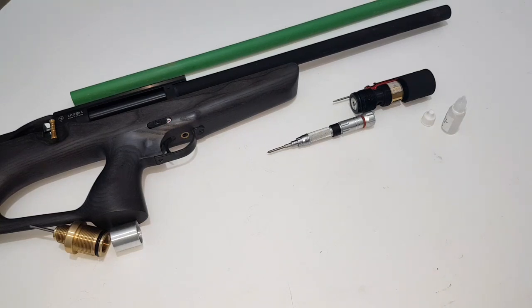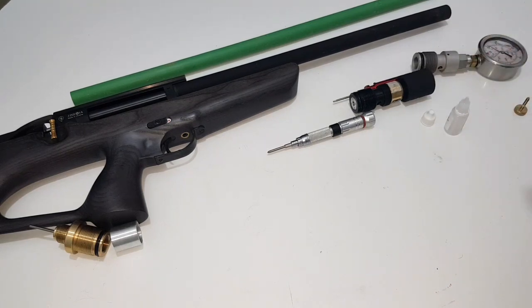Even if you don't have a regulator tester with you, first every one of you needs to know at what pressure his gun is functioning by looking at the chronograph. When the shots are no longer consistent, you will be able to read on the manometer that the gun is not working normally, so you will be able to identify at what pressure the gun is set.